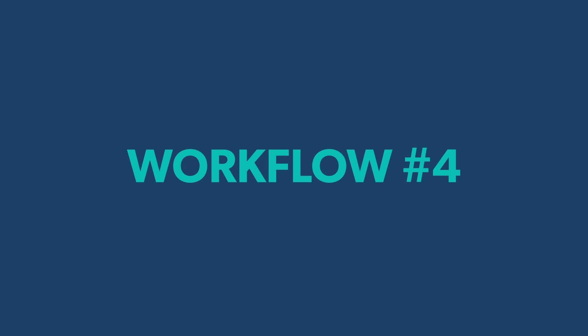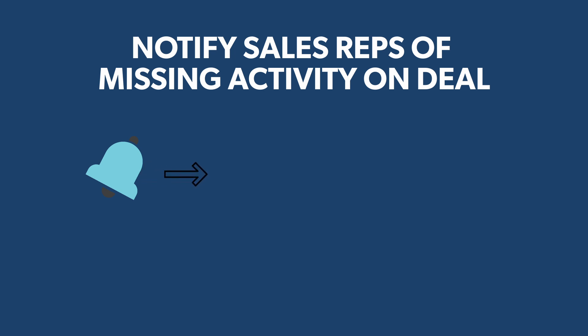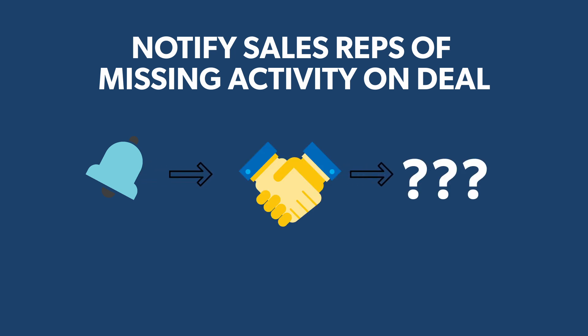Workflow number four is a deal notification workflow — it's deal based. We're going to notify our sales reps if they have an open deal that is missing next activity. There is a next activity property inside of HubSpot that auto-populates if there's a future task, call, or meeting scheduled on this deal. If there is not one, the next activity date field will be blank. This is important — if sales reps have an open deal without any next steps scheduled, they should schedule something, whether it's a task to call, email, a week from now or a month from now.